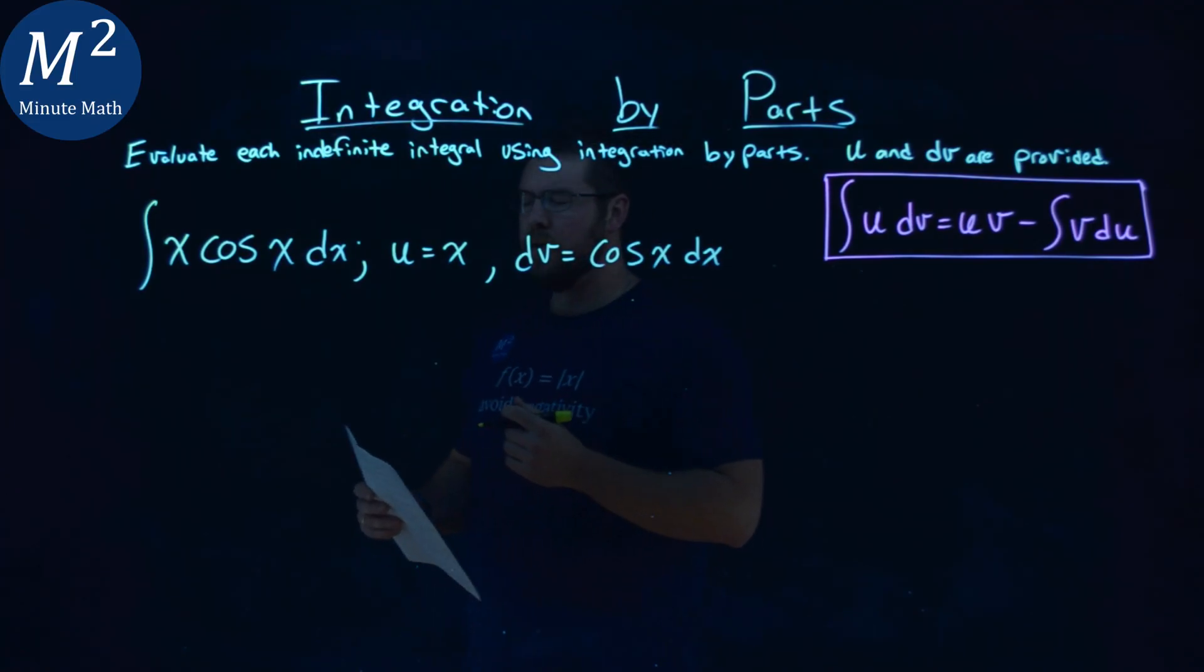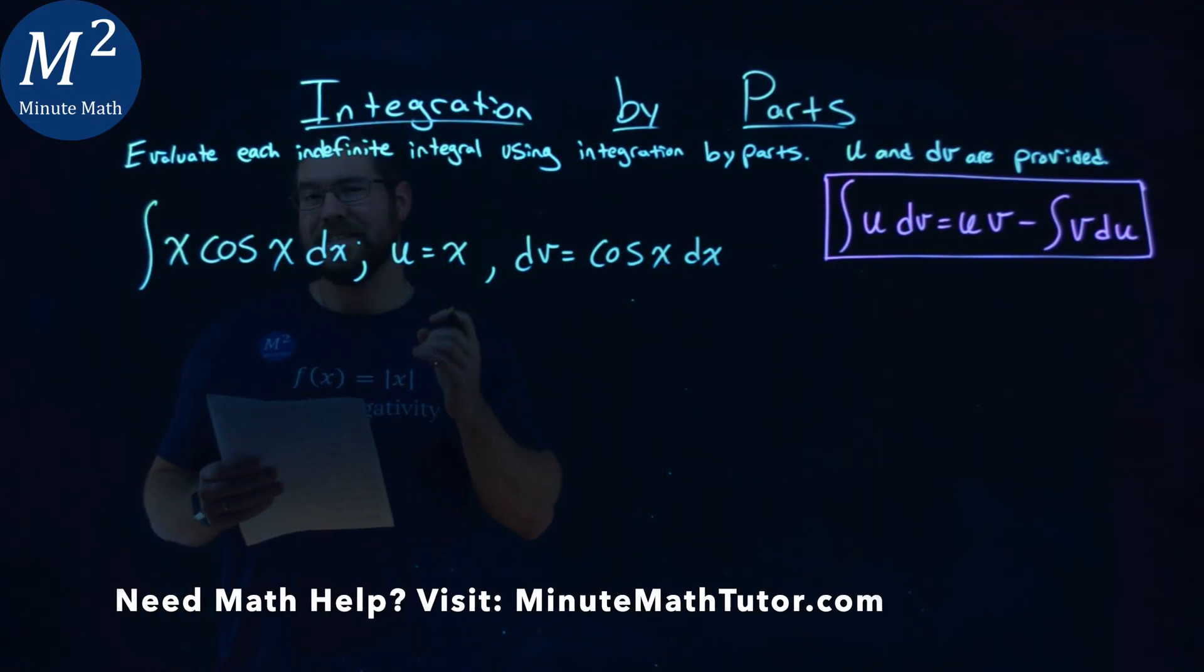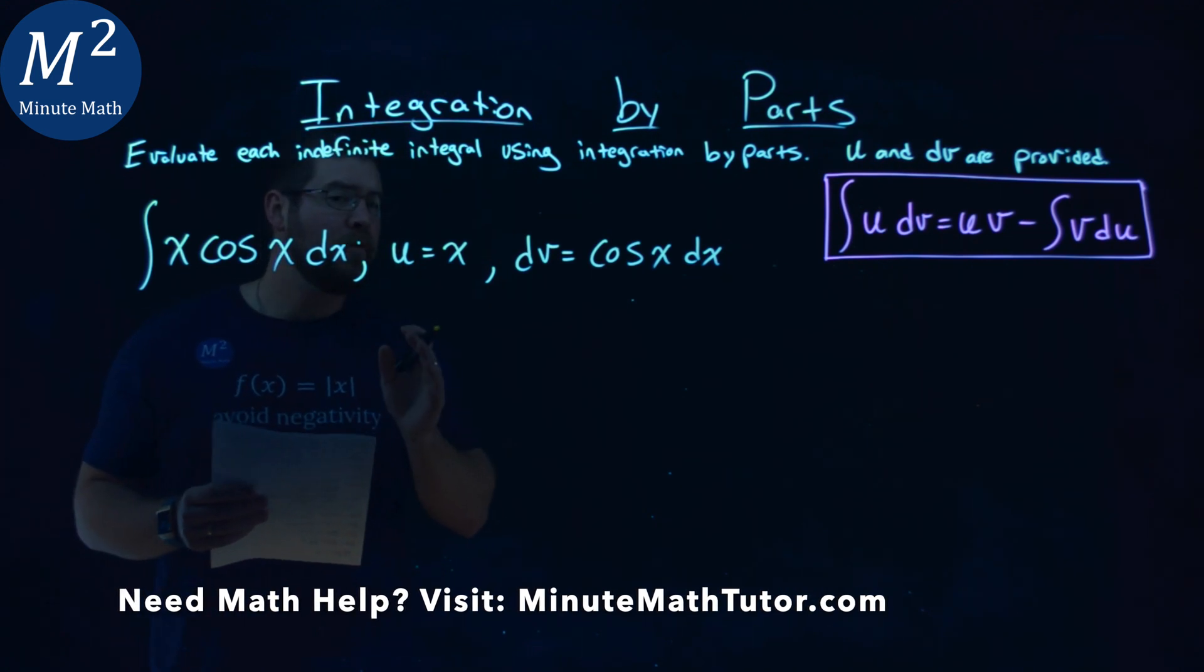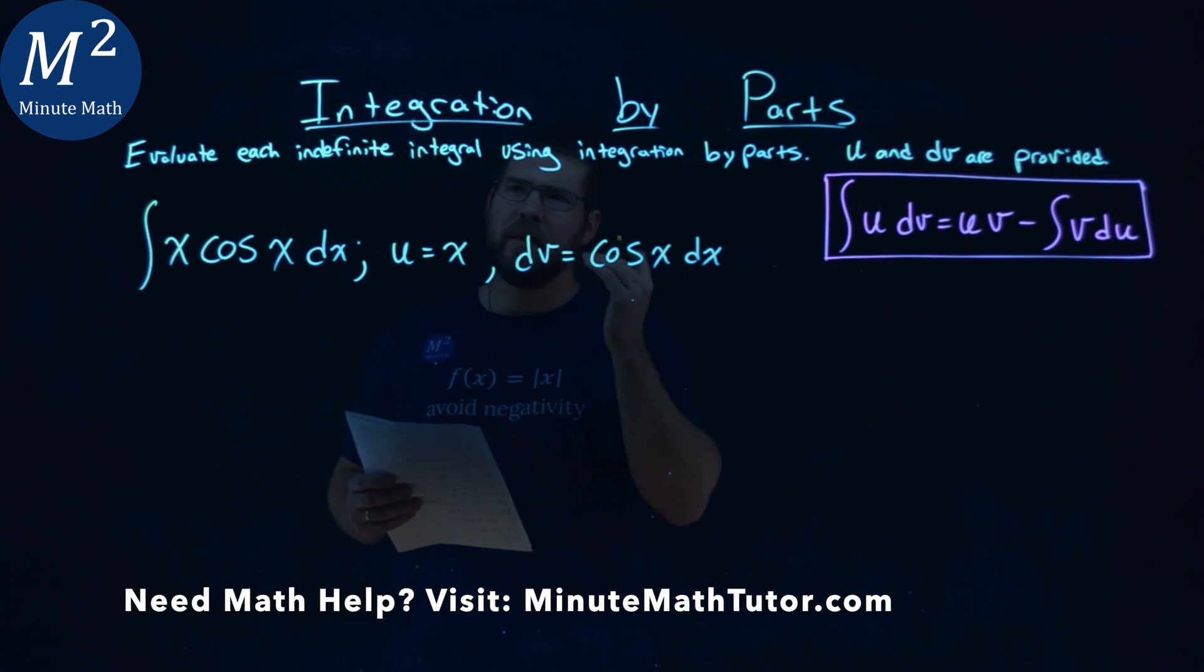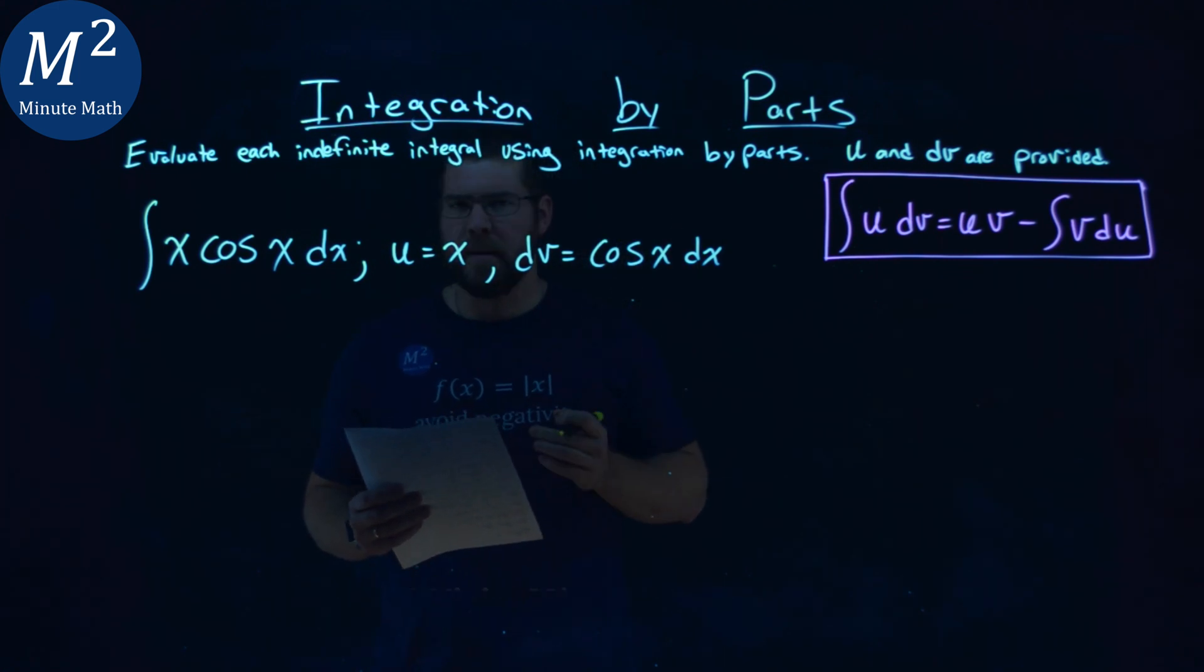We're given this problem right here, the integral of x cosine x dx, and we're given the u value of x and dv value of cosine x dx, and we can evaluate this indefinite integral using integration by parts.